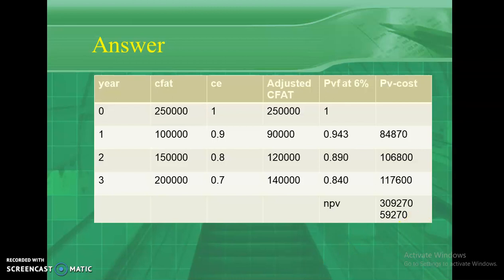Always remember the steps: Step 1 — multiply the cash flow after tax with the certainty equivalent to get the adjusted cash flow after tax. Step 2 — multiply the adjusted cash flow after tax by the present value factor at the risk-free rate to get the present value of cash inflows. Step 3 — add all present values of cash inflows, find the present value of cash outflows, and the difference is the NPV of the project.